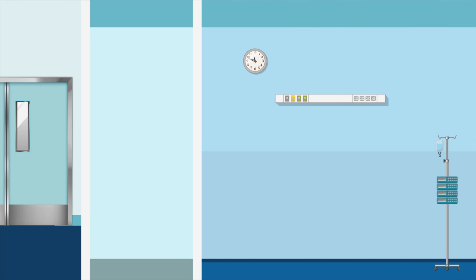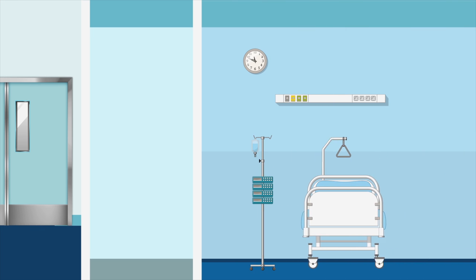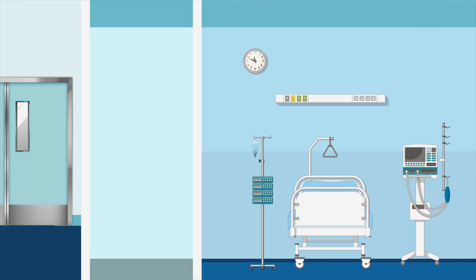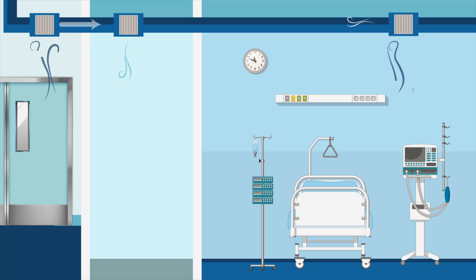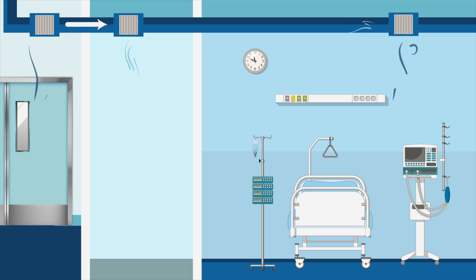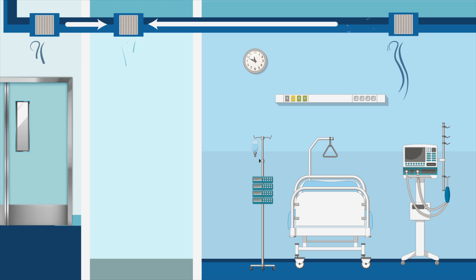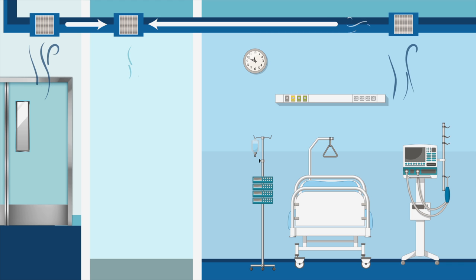The way that air flows through the anti-room will depend on how the room was designed, so it is important to know which directions the air is flowing between the corridor and the anti-room, and between the patient room and the anti-room, in order to use these rooms safely.